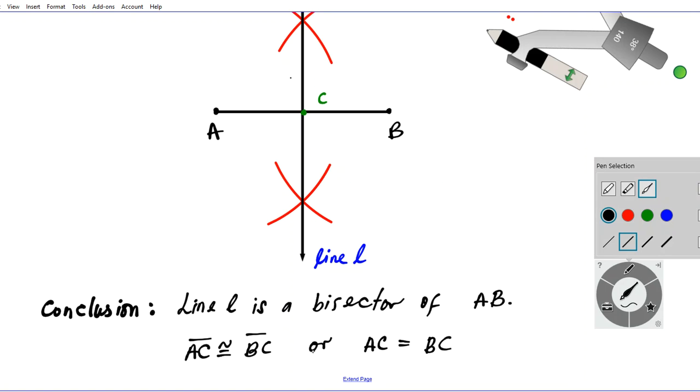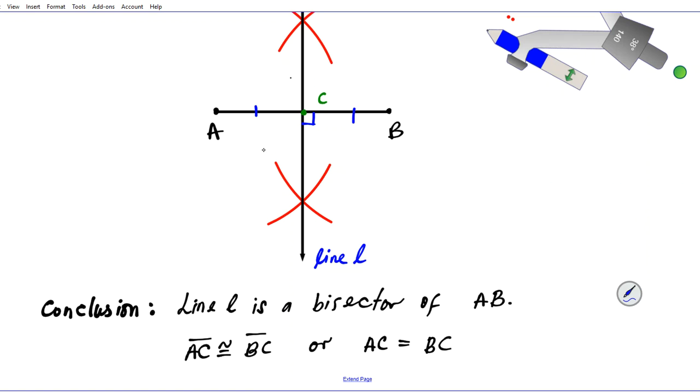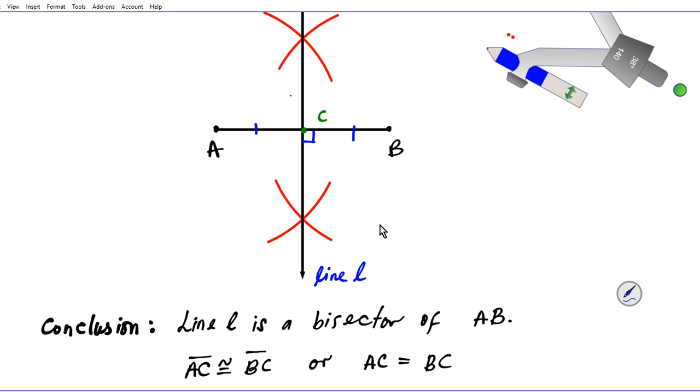If you want to indicate this conclusion on our construction here, we can just use marks. Just put a mark here and a mark here. Another thing to note is that our bisector is also perpendicular to segment AB. That's what happens anytime you create the bisector of a line segment. This is how you bisect a line segment.